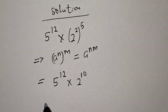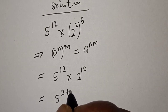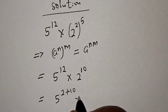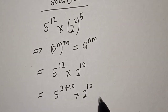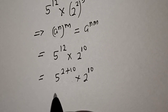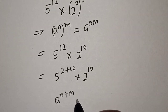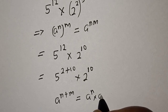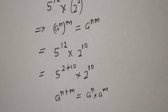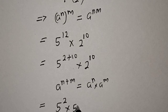Then 5 raised to power 12 can be written as 5 raised to power 2 plus 10, multiplied by 2 raised to power 10. Now take note of this rule: a raised to power n plus m is equal to a raised to power n multiplied by a raised to power m. This is equal to 5 raised to power 2 multiplied by 5 raised to power 10.